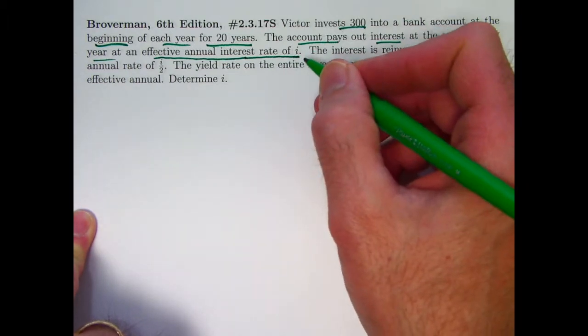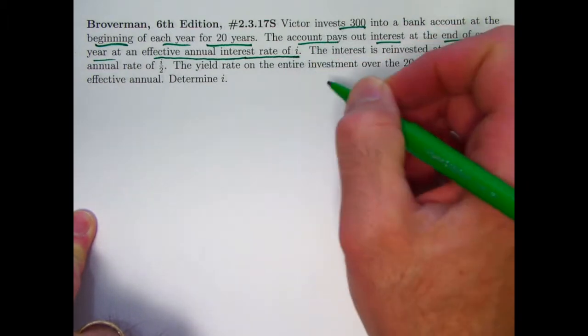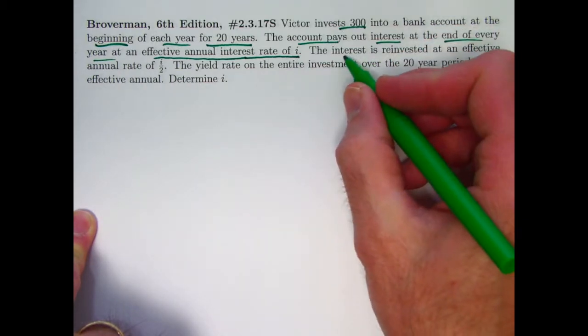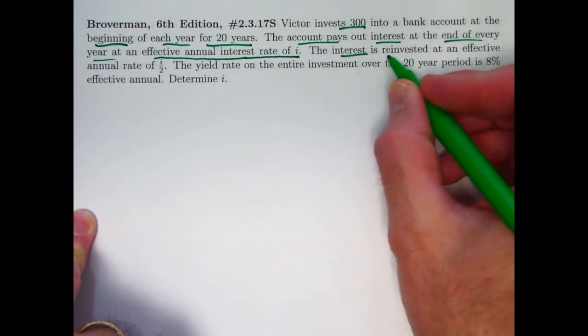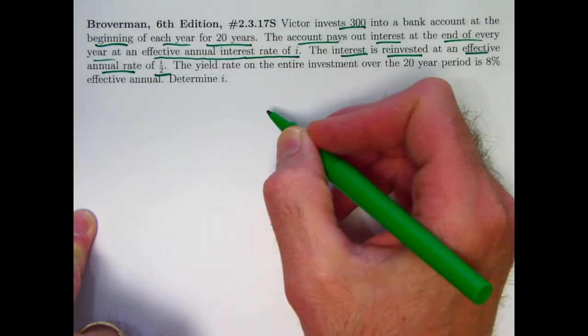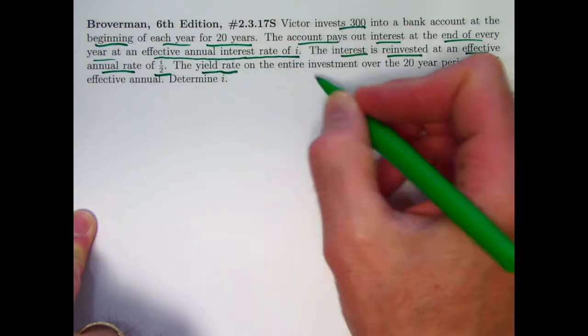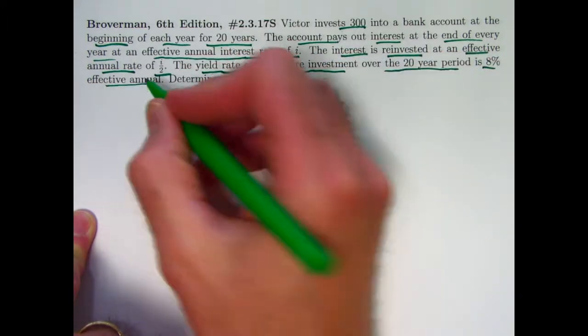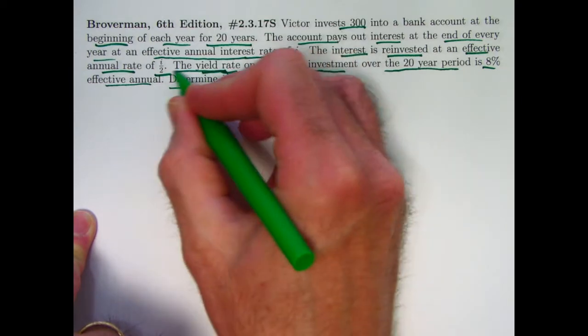Victor invests $300 into a bank account at the beginning of each year for 20 years. So that's an annuity due. The account pays out interest at the end of every year at an effective annual interest rate of I. The interest from the first account is reinvested in a different account with a different effective annual rate of I over 2. The yield rate on the entire investment over the 20-year period is 8% effective annual. The goal is to determine I.